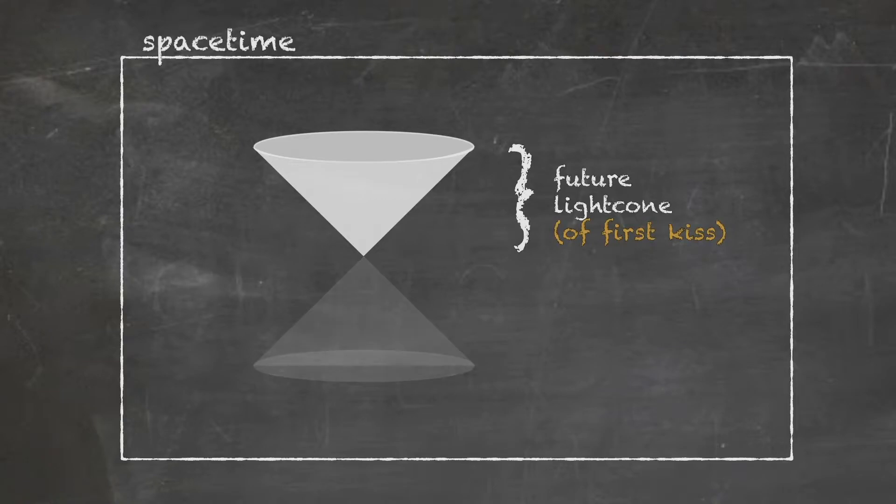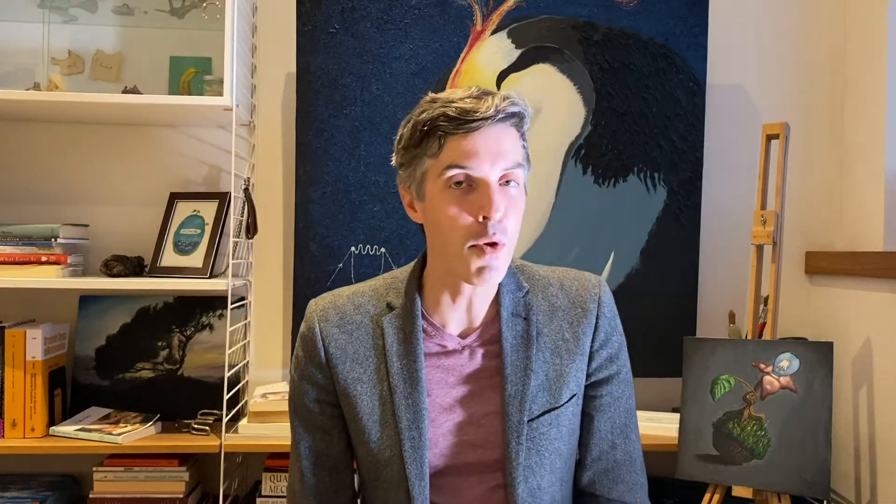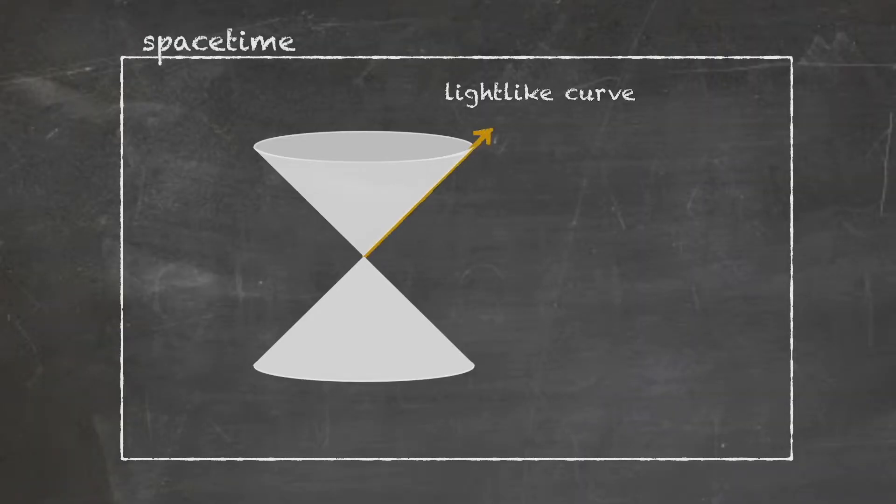The top part of this double cone is sometimes called the future light cone of my event, and the bottom cone is called the past light cone. Any curve describing a body moving less than the speed of light is called a time-like curve. Time as in time is passing. A curve on the light cone is called a light-like curve. It's the path that a particle of light could travel. And any other curve at all is called a space-like curve.